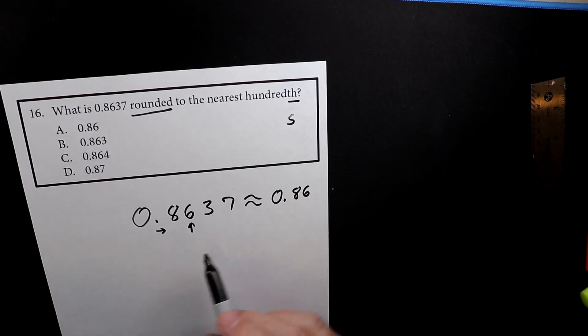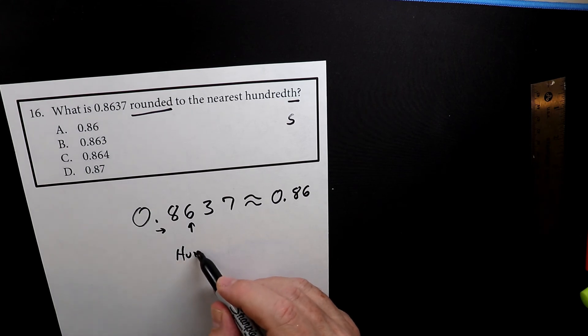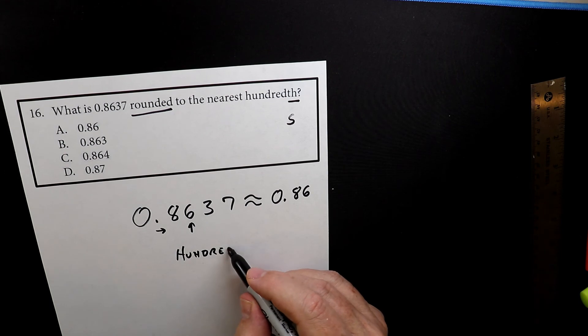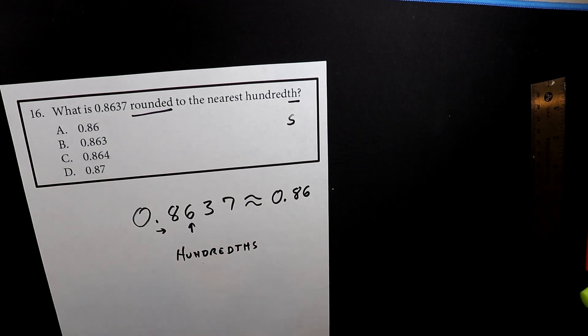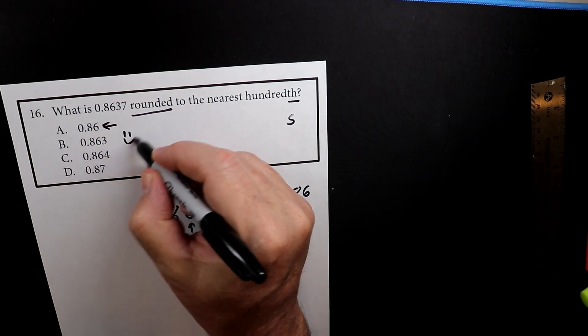And that's because we rounded to the hundredths, the second place to the right of the decimal point. And that is letter A. And there's your right answer.